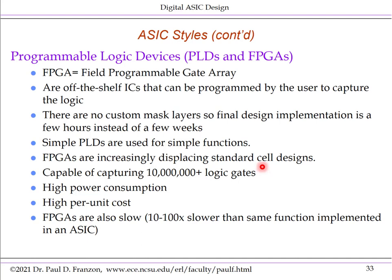FPGAs are capable of capturing millions of gates, but not billions. If you need a 100 million or billion gate circuit, you're stuck with a standard cell design. Other limitations of FPGAs are high power consumption, high per-unit cost, and slow speed. In general, an FPGA will be 10 to 100 times slower than the same function implemented as an ASIC.